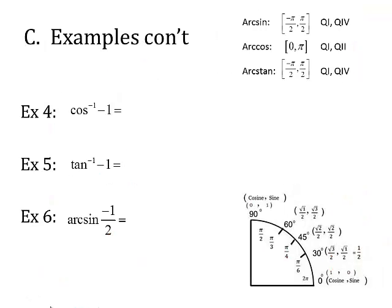Arc cosine of negative 1: arc cosine can only come from quadrants 1 and 2. Since it's negative, I'm in quadrant 2. I'm looking for the angle that has a cosine of negative 1. The coordinate negative 1, 0 on the unit circle — where is that angle? That's at angle pi. Angle pi works just fine.